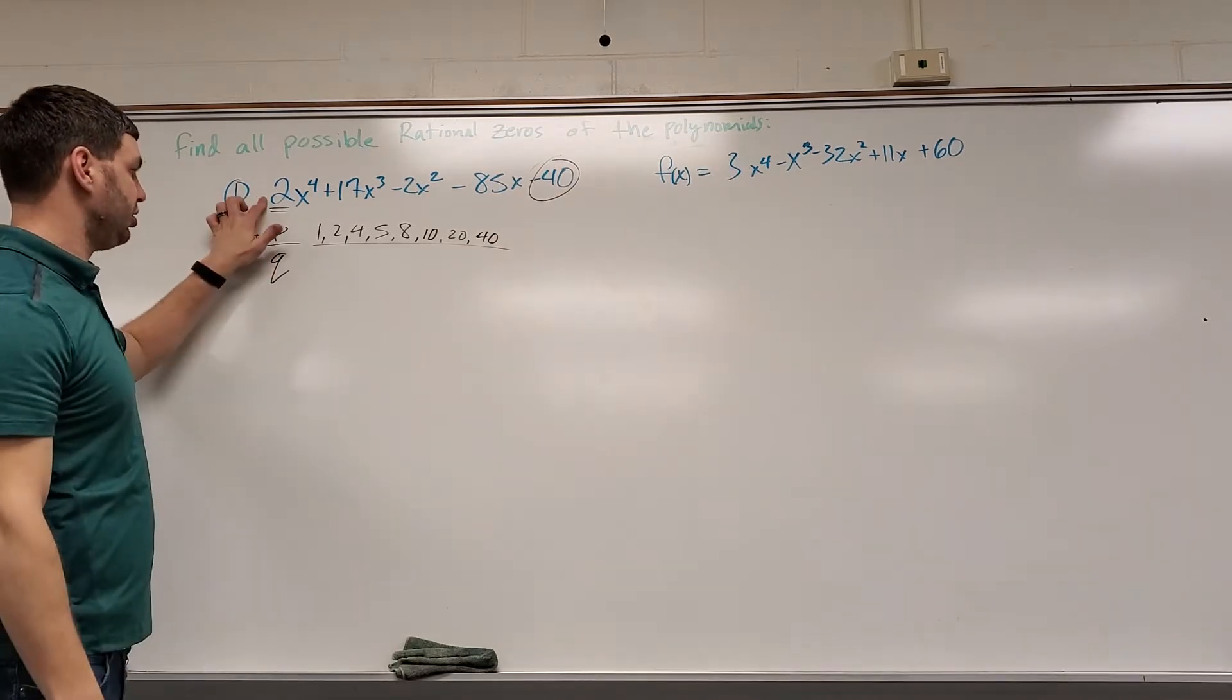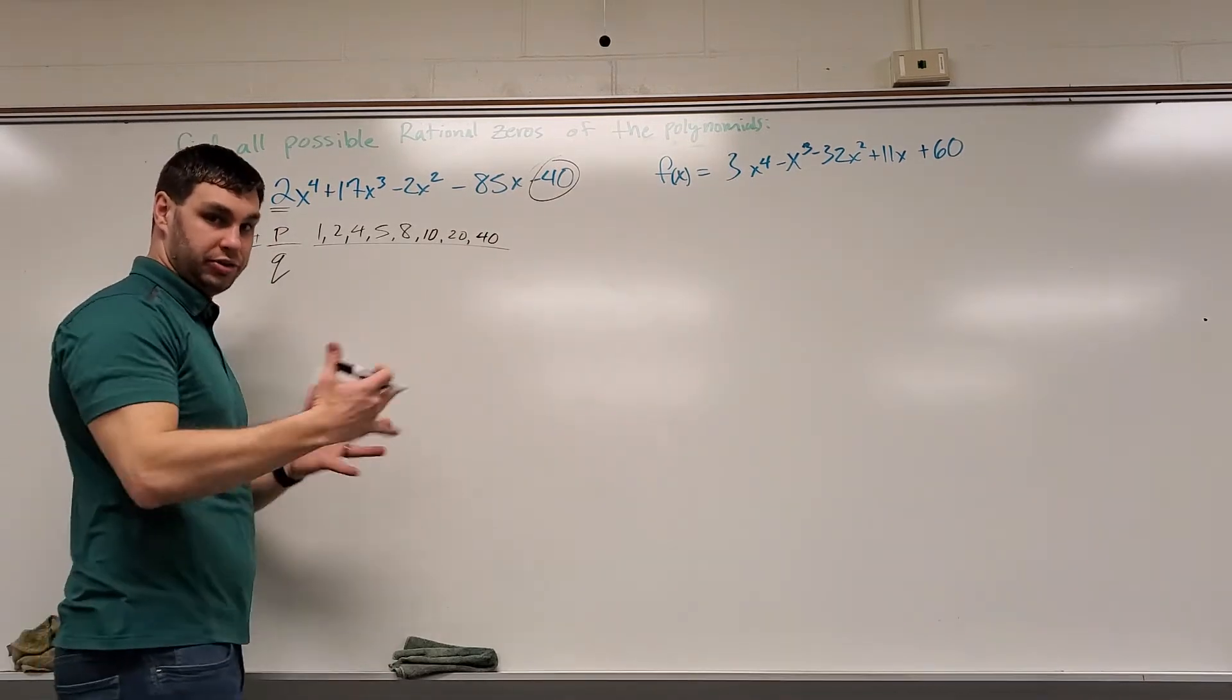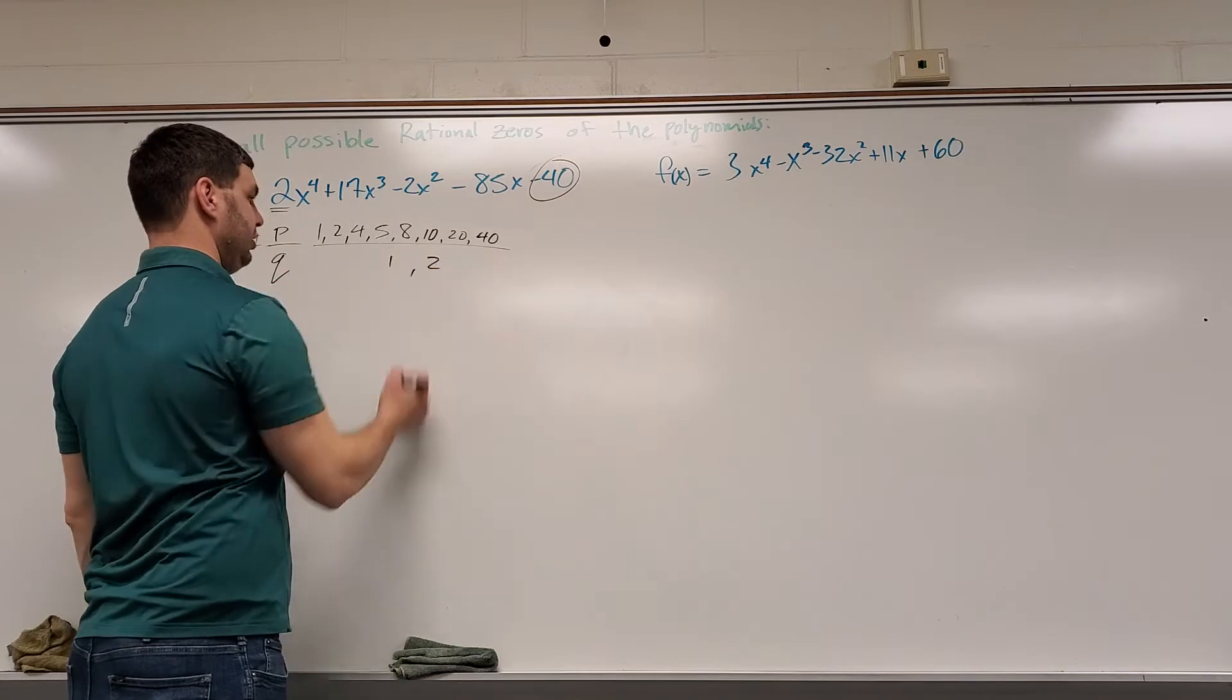Over the q's, which is 2, well the only things that go into 2 are 1 and 2, there's going to be a 1 and 2 for possibilities there.